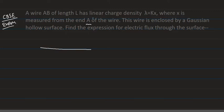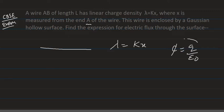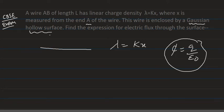The wire is of length capital L and its linear charge density is lambda equal to kx, where k is some constant. So lambda is a function of x. First we need to find the total charge. From Gauss's theorem we know that phi is equal to Q by epsilon naught, so we need to find the entire charge on the wire enclosed by the Gaussian surface.